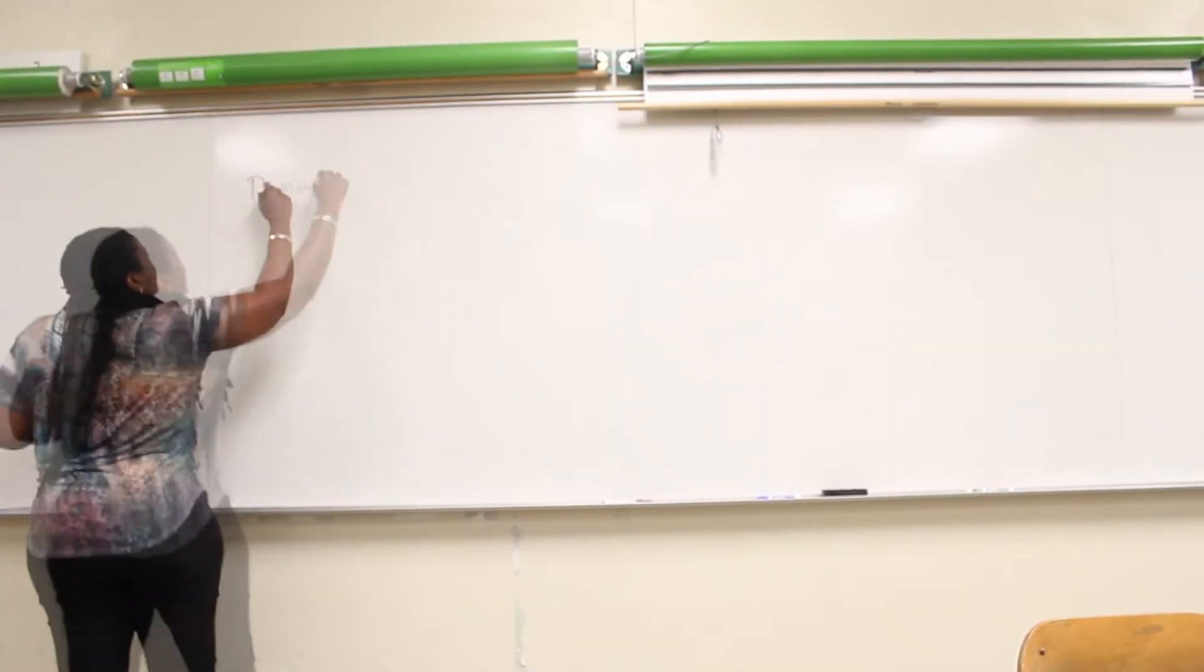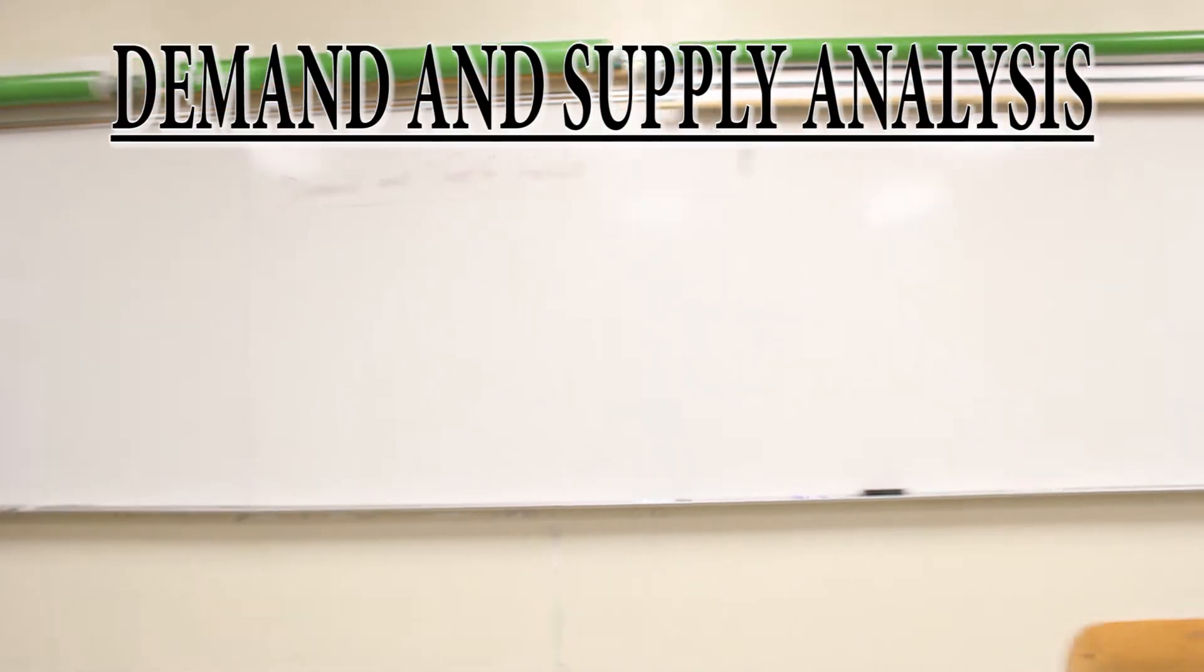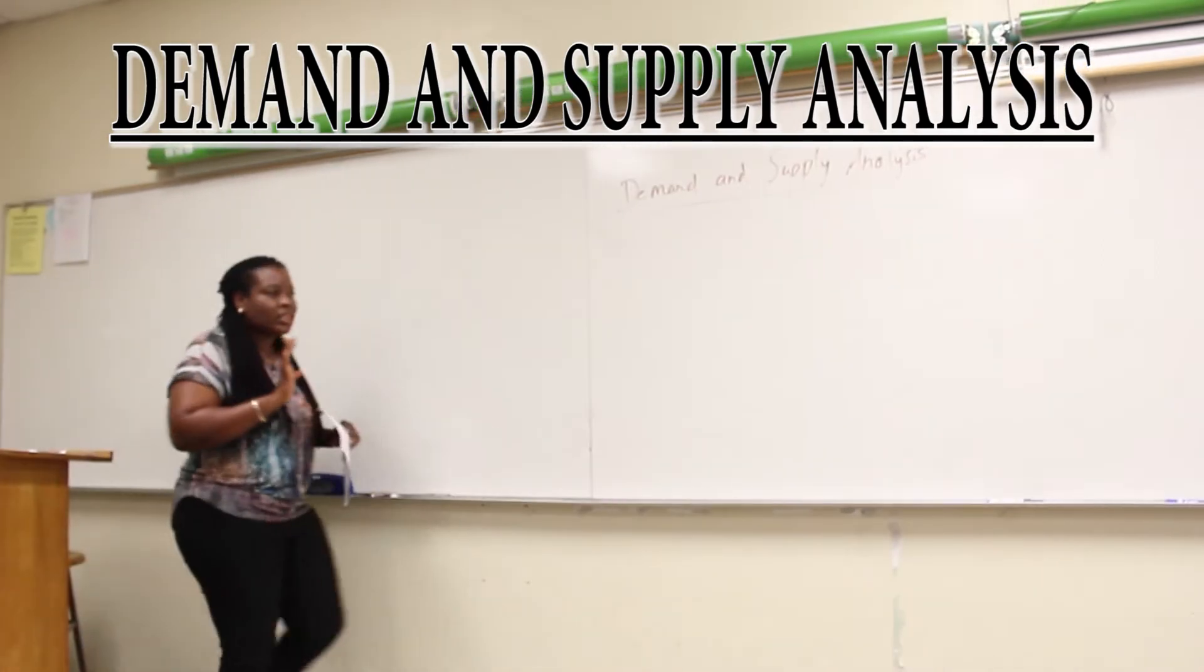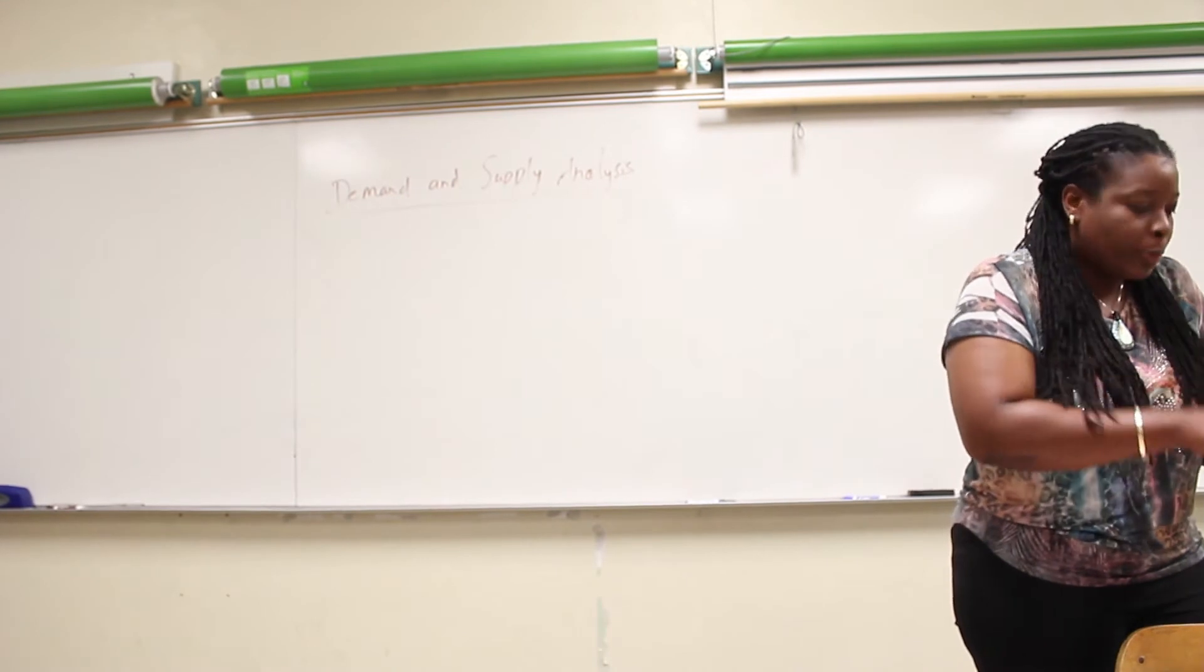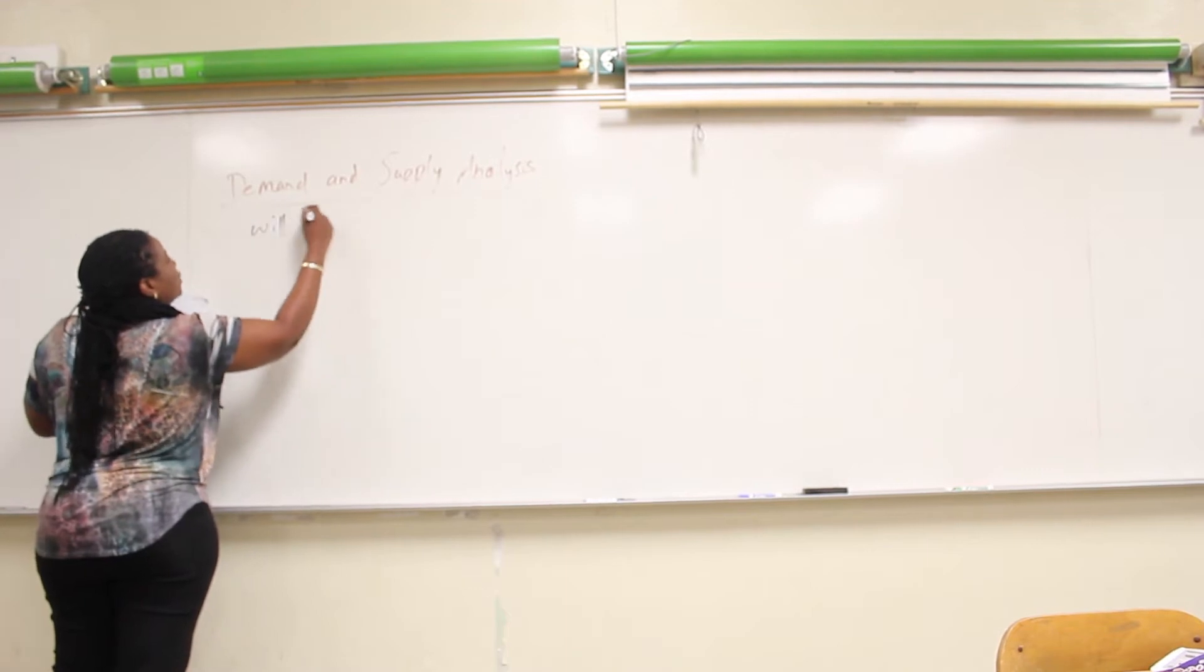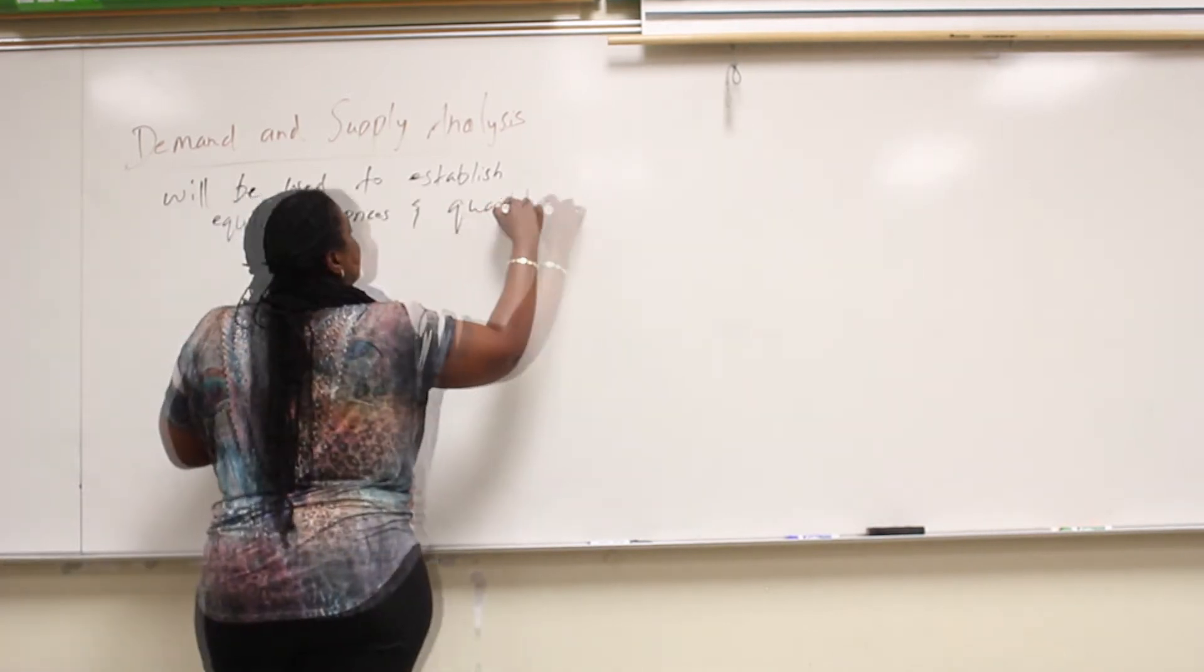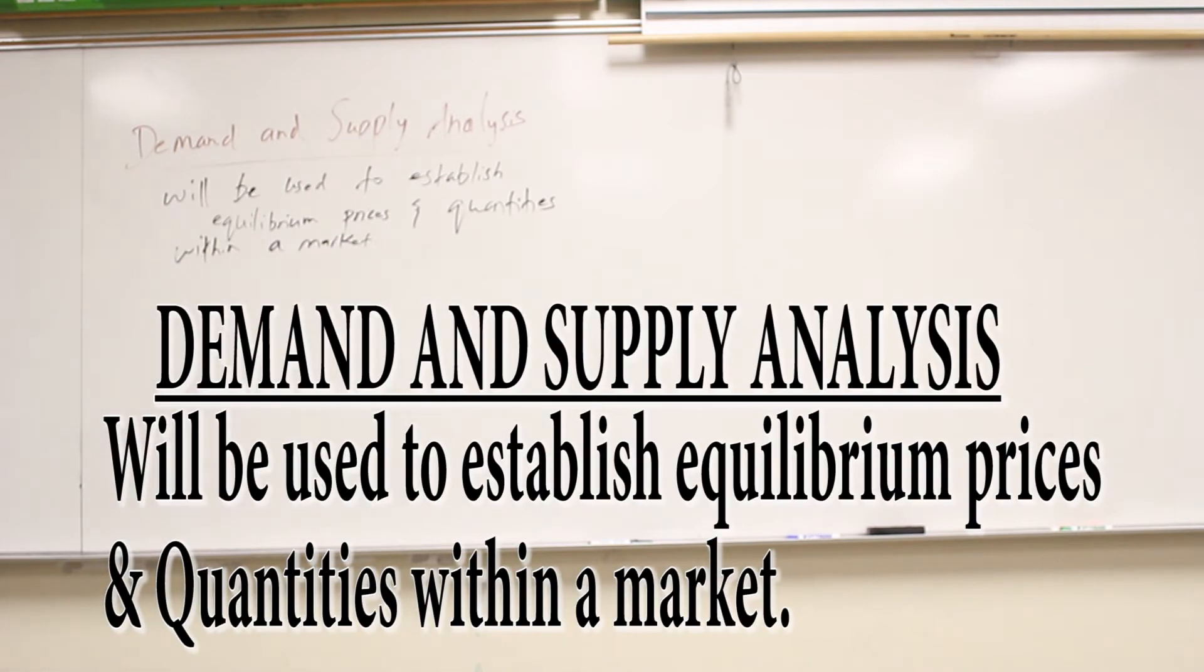So we're going to start what's called demand and supply analysis, and it really is where the story of micro kind of begins. We do demand and supply in both micro and macro, and we do it the same way. However, when you're talking about looking at small sectors of society, this is where it kind of begins. What we're going to be using this to do is demand and supply analysis will be used to establish what we call equilibrium prices and quantities within a market. We do this with demand and supply analysis, and later on you'll see exactly what we mean by this concept of equilibrium.